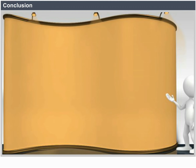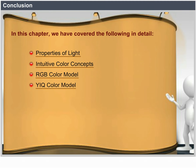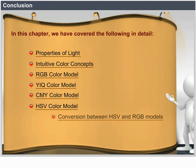Conclusion. In this chapter, we have covered in detail: Properties of light, intuitive color concepts, RGB color model, YIQ color model, CMY color model, HSV color model, and conversion between HSV and RGB models, and HLS color model.